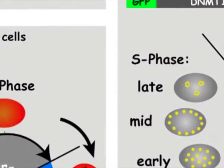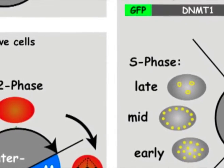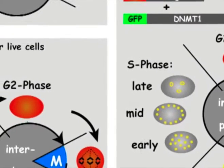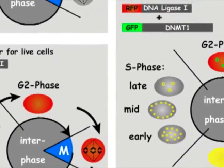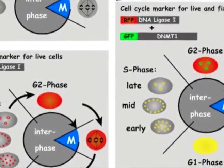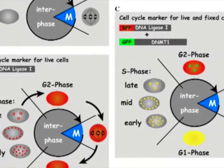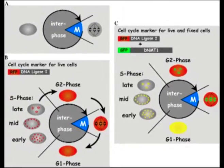G2: This is the second gap or growth phase, or resting phase, of interphase. During G2 phase, synthesis of RNA and protein continues, which is required for cell growth.